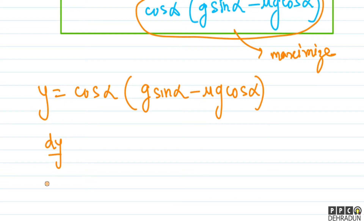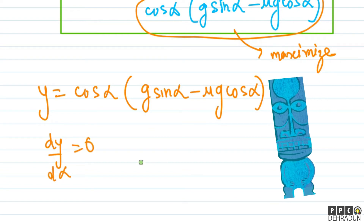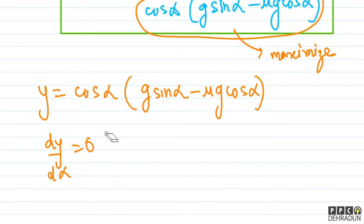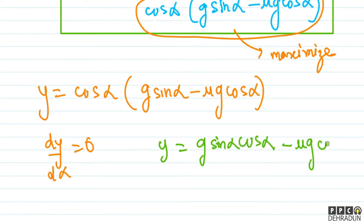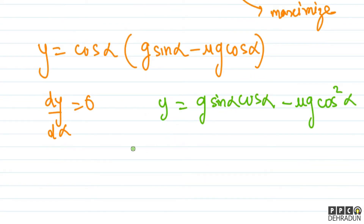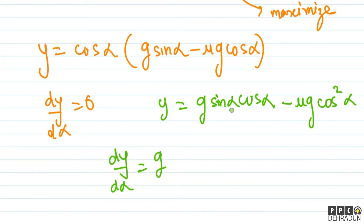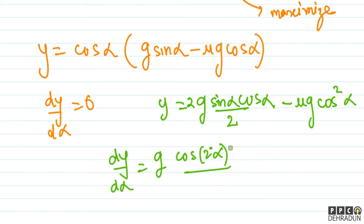Setting dy/d alpha = 0. First, simplify Y: Y = g sin alpha cos alpha − mu g cos² alpha. Differentiating: d/d alpha of g sin alpha cos alpha can be rewritten as g sin 2alpha / 2, whose derivative is g cos 2alpha. The derivative of −mu g cos² alpha gives +2 mu g cos alpha sin alpha.